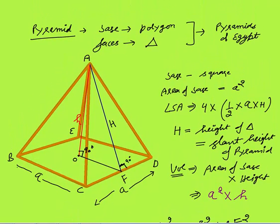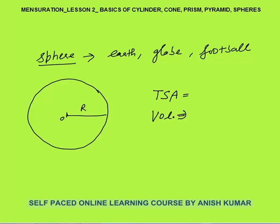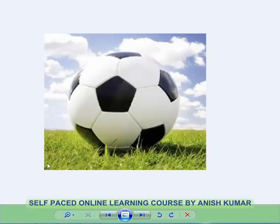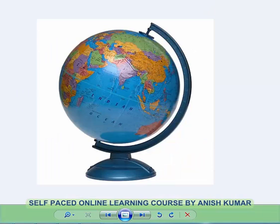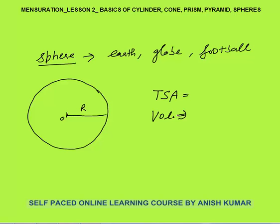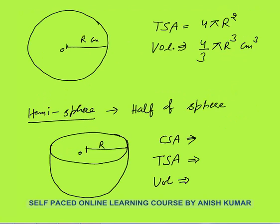The next solid is sphere. Earth is in the shape of a sphere, globes in offices are in the shape of a sphere, and footballs are also in the shape of a sphere. Total surface area of a sphere with radius r is 4πr². Volume of sphere is (4/3)πr³ cubic centimeters.